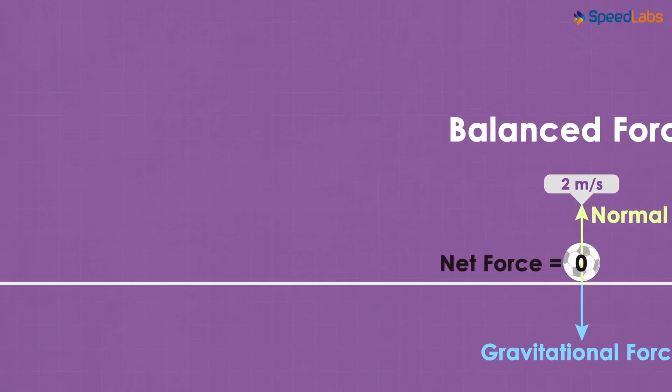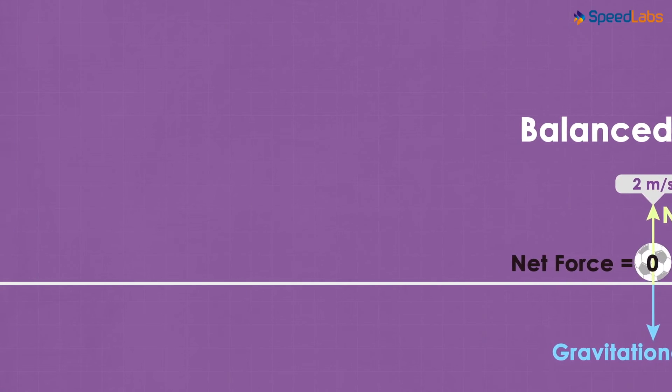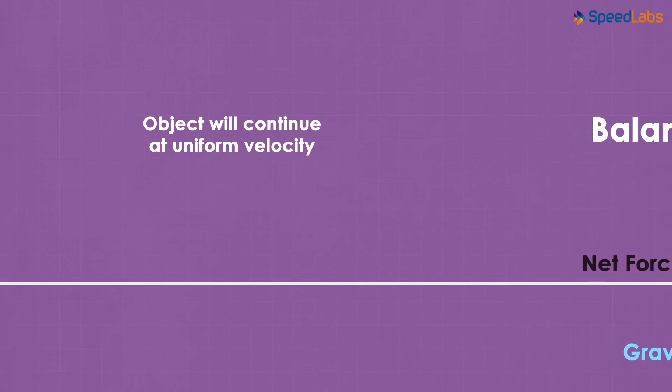Most people assume that if the object is moving then there is some net force acting on it but that's not true. An object will continue to move at uniform velocity even if the net force on it is 0.